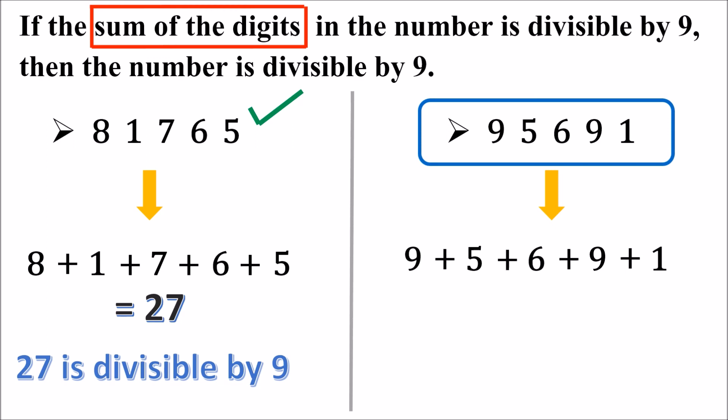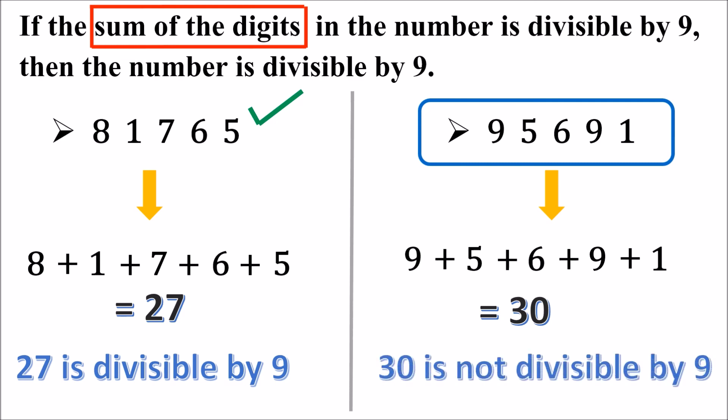9 plus 5 is 14, 14 plus 6 is 20, 20 plus 9 is 29, and 29 plus 1 is 30. Is 30 divisible by 9? No, 30 is not divisible by 9 because 30 is not a multiple of 9. So the sum of the digits of this number is not divisible by 9. Therefore, the given number is not divisible by 9.